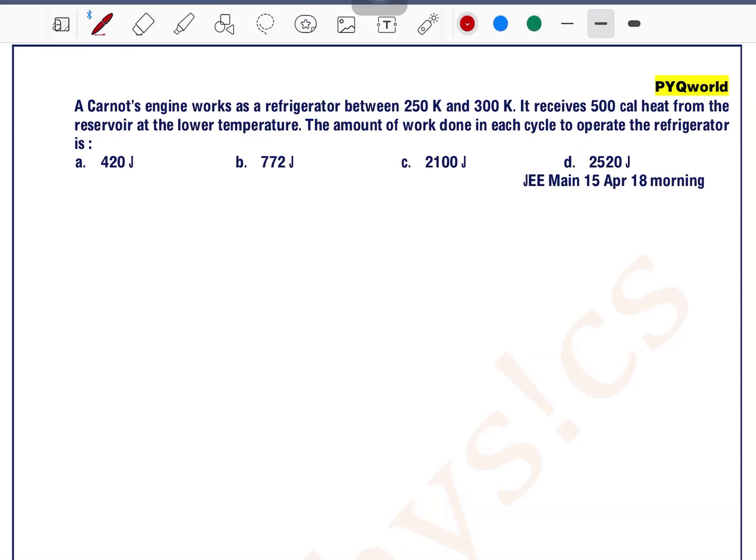A Carnot's engine works as a refrigerator between 250 Kelvin and 300 Kelvin. T1 is the source temperature, T2 is the sink temperature. So we can write T2 as 250 Kelvin and T1 as 300 Kelvin.